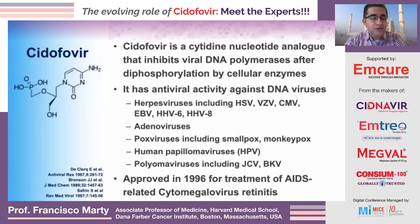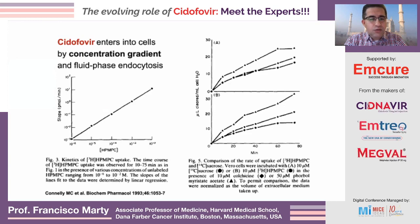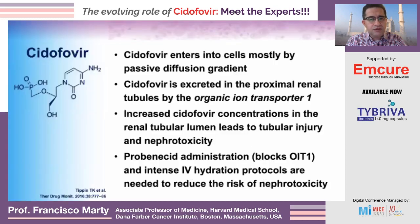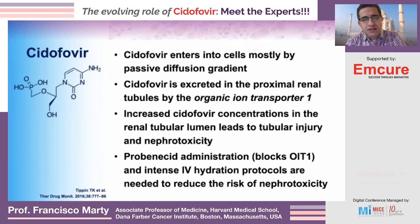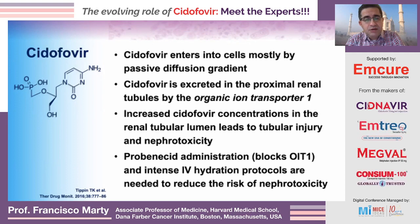Cidofovir was approved in 1996 for the treatment of AIDS-related cytomegalovirus retinitis, and that is the only approved indication anywhere in the world. An important characteristic is that it enters cells by concentration gradient — that's why we give it as a quick infusion, to generate that concentration gradient so the molecule can enter cells. It is excreted in the proximal renal tubules by organic ion transporter 1, which leads to accumulation and tubular injury — nephrotoxicity. That's the reason we use probenecid, which blocks that transporter, along with intense IV hydration protocols.